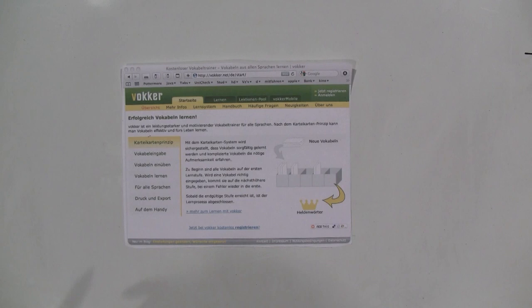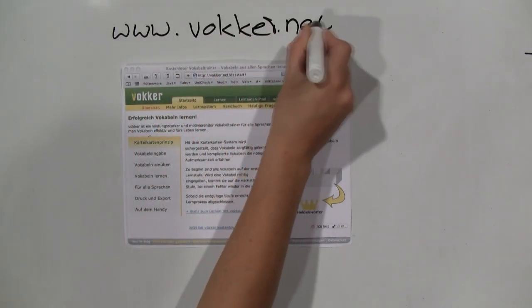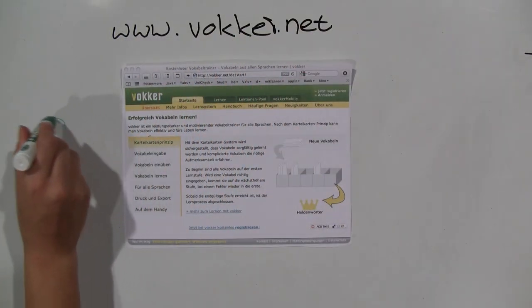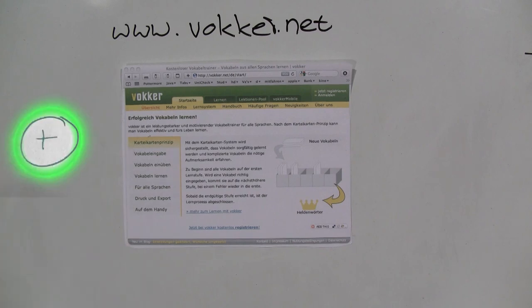If you're more of a computer person, you can use a similar and free solution on the internet at www.vokker.net. Advantages would be: you can learn wherever you want, you just need the internet. Your spelling is always checked simultaneously, you cannot cheat yourself, and you can use it on your mobile phone and have access to clear statistics.